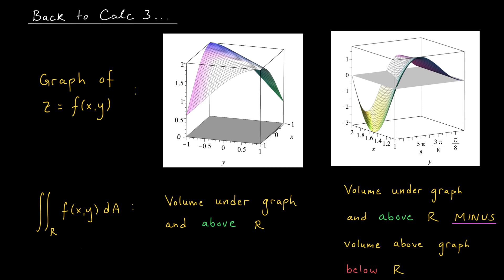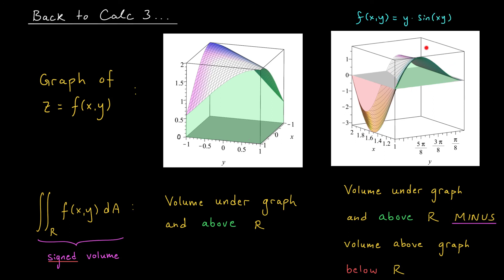This situation extends directly to Calc 3. The interpretation of a double integral is exactly analogous to a single integral. If the graph of our function lives above a region R in the xy-plane, the double integral represents the volume under the surface and above the region. But if the graph dips below the xy-plane, volume above the plane is counted positively and volume below is counted negatively — the double integral computes a signed volume. The graph of f(x, y) equals y sine(xy) is such that the volume above the xy-plane exactly equals the volume below it, so the two cancel out and we get zero.